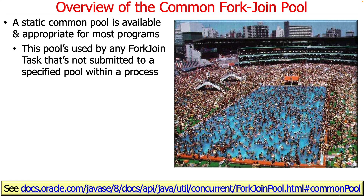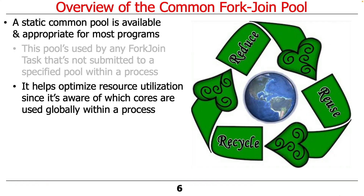This pool is used by any fork join task that's not submitted to a specific or specified pool. You can make your own pool that's not the common pool and invoke, submit, or execute tasks on it. But if you don't do that, it defaults to using the Common Fork Join Pool. This helps to optimize resource utilization since the common pool is aware of all the cores used globally within a process, and it's also aware of all the tasks in that pool — so we can use all the work stealing techniques to maximize utilization.